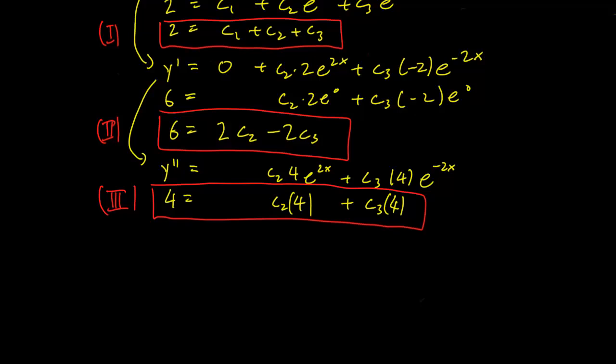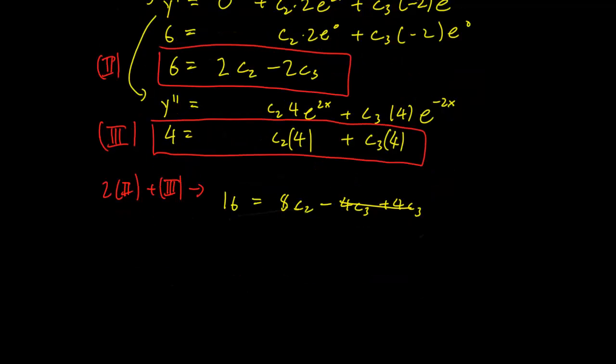So first, if we have that 2 times the second equation plus the third equation, that is going to imply that 16 equals 8c₂ - 4c₃ + 4c₃. And these two cancel out.